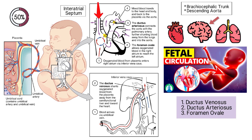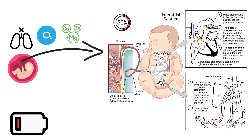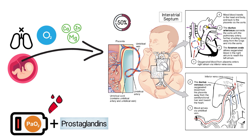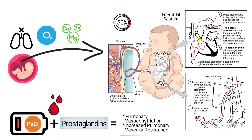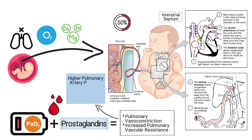Venous blood from the superior vena cava is directed downward into the right atrium, then into the right ventricle, and finally into the main pulmonary artery. However, the relatively low PaO2 and the presence of prostaglandins in the fetal blood results in pulmonary vasoconstriction and increased pulmonary vascular resistance, leading to a higher pulmonary artery pressure than aortic blood pressure.